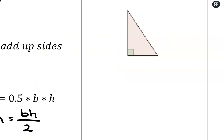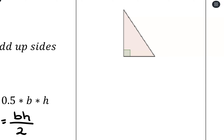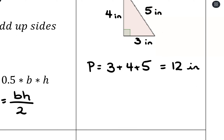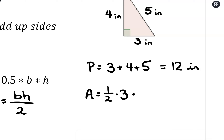For example, let's say this is a 3, 4, 5 triangle in inches. For perimeter, we just add them up: three plus four plus five equals twelve inches. For area, we take one half times base times height. Notice we don't use the 5 — so that'll be twelve divided by two, which is six square inches.